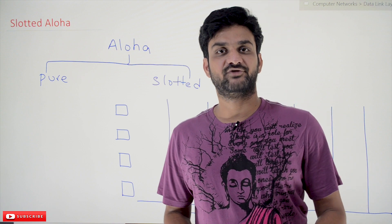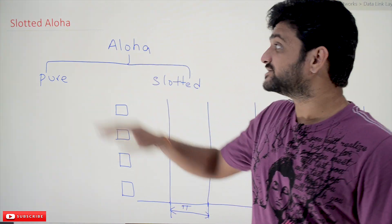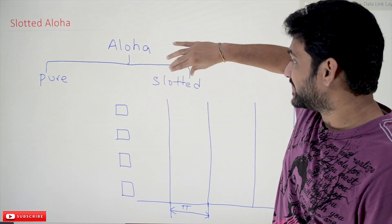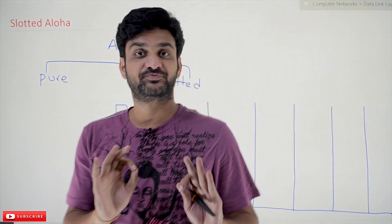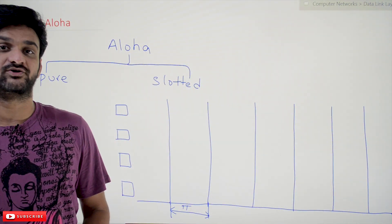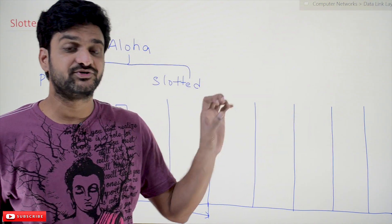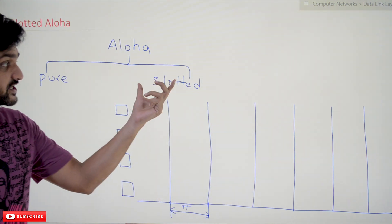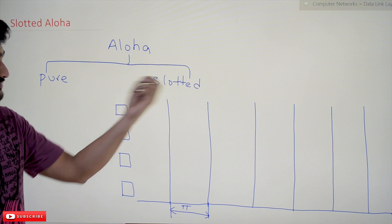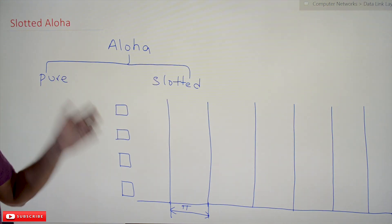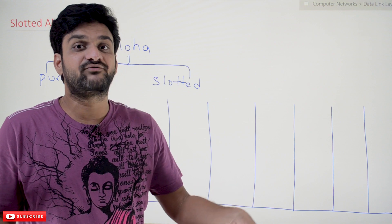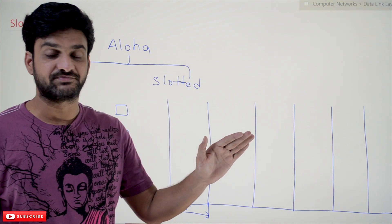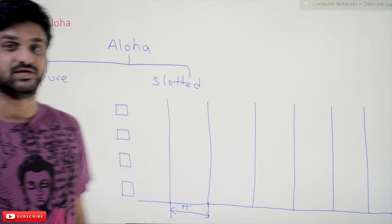Hi, welcome to Learning Monkey. I am Vikram. In this class we'll try to understand Slotted Aloha. Aloha is broadly divided into two types: Pure Aloha and Slotted Aloha. The concepts related to Pure Aloha have already been discussed in our previous videos. If you haven't watched those videos, please watch them and come back, because understanding Pure Aloha is very important to understand Slotted Aloha. Every video in our channel is part of an entire course or playlist — our suggestion is to follow the entire course for better understanding. The link for the playlist is provided in the description below.